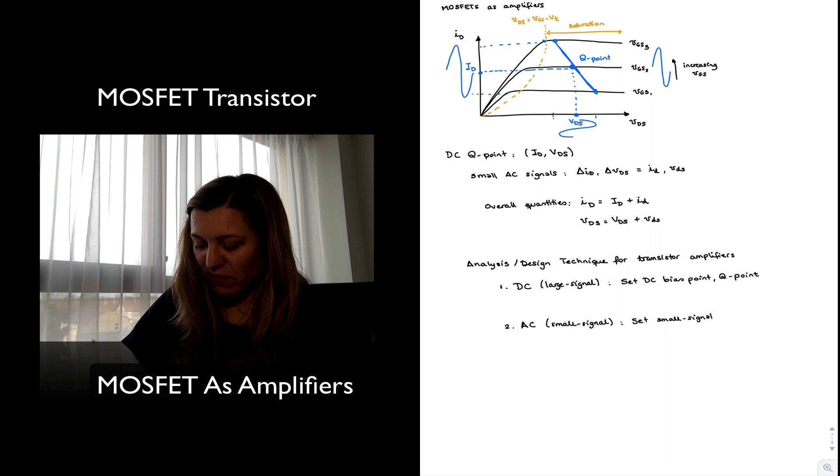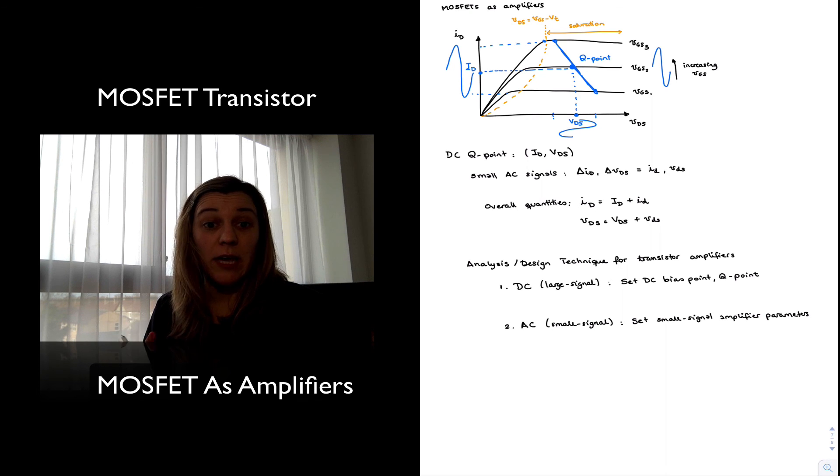Meaning the gain, input resistance, output resistance, etc. Because they are so drastically different and the behavior of the transistor is different for large DC signals and for small AC signals, most of the time I will be using different models when I'm performing the DC portion of my analysis and the small signal AC portion of my analysis.